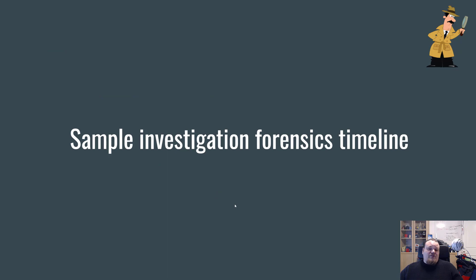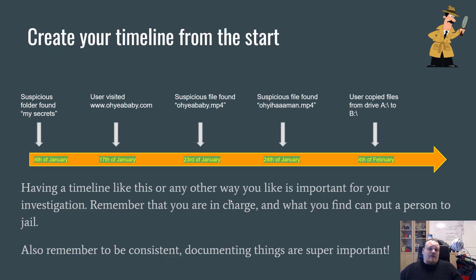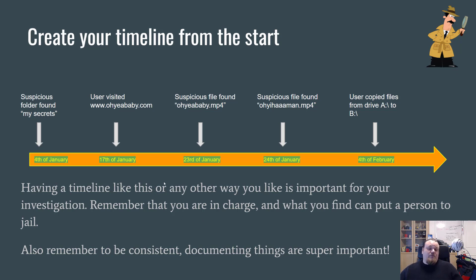A sample investigation timeline might state different dates when events occurred. For example, a timeline spanning from January 4th to February 4th represents a one-month duration of an investigation.